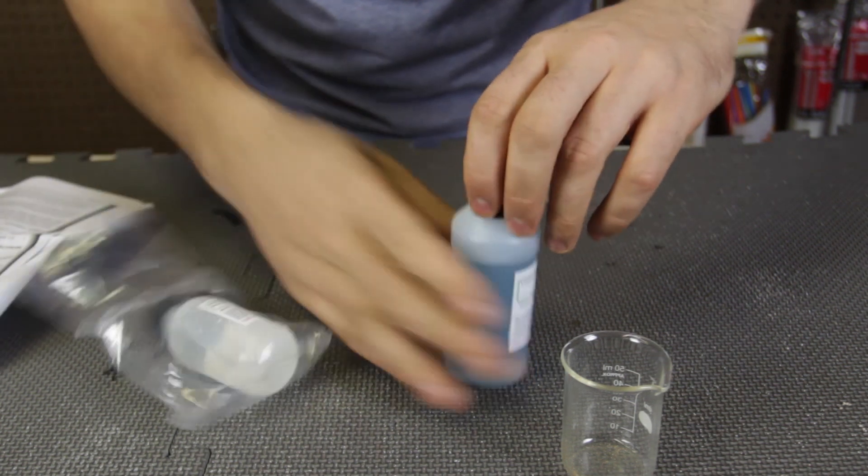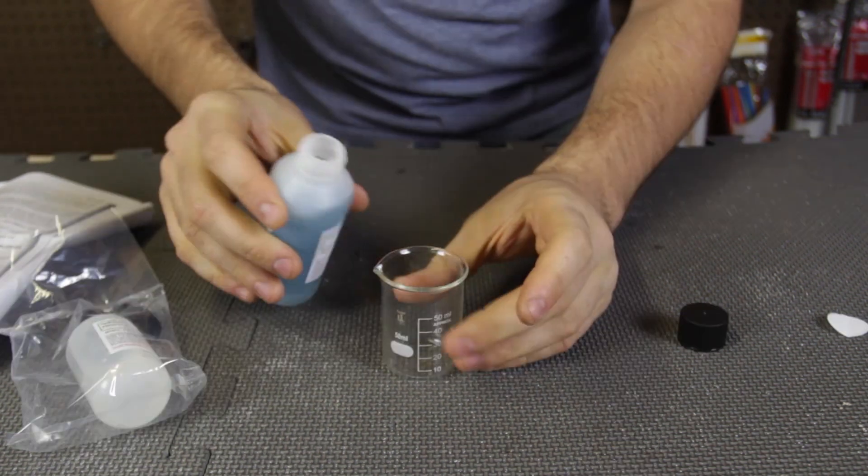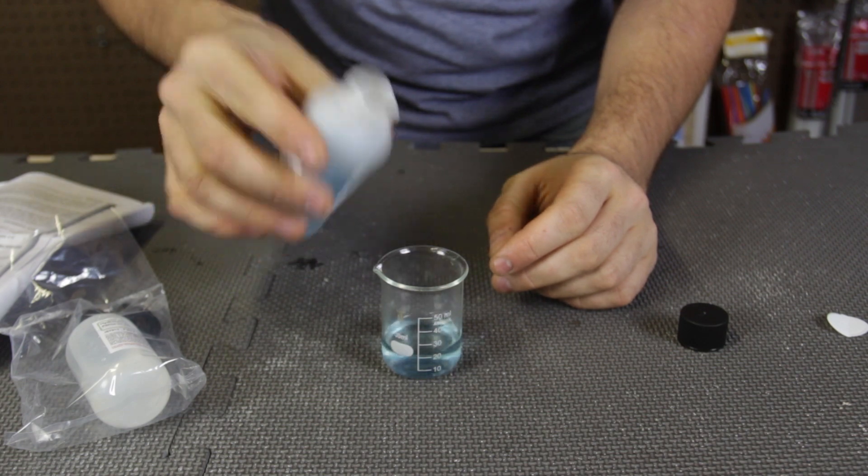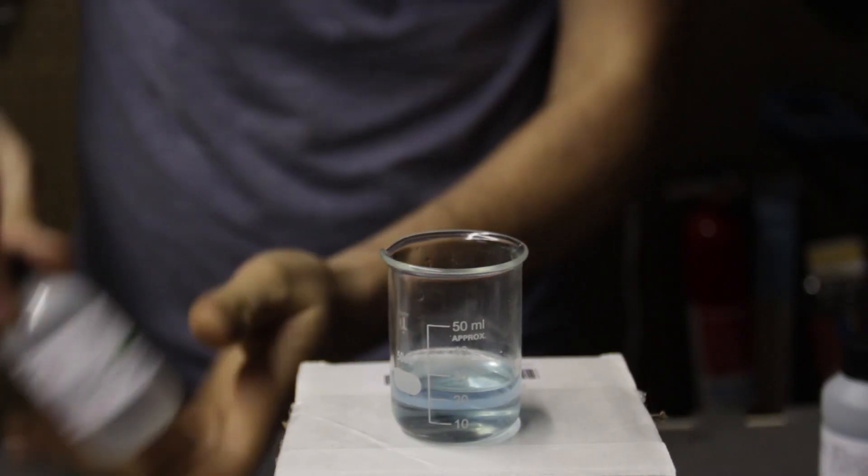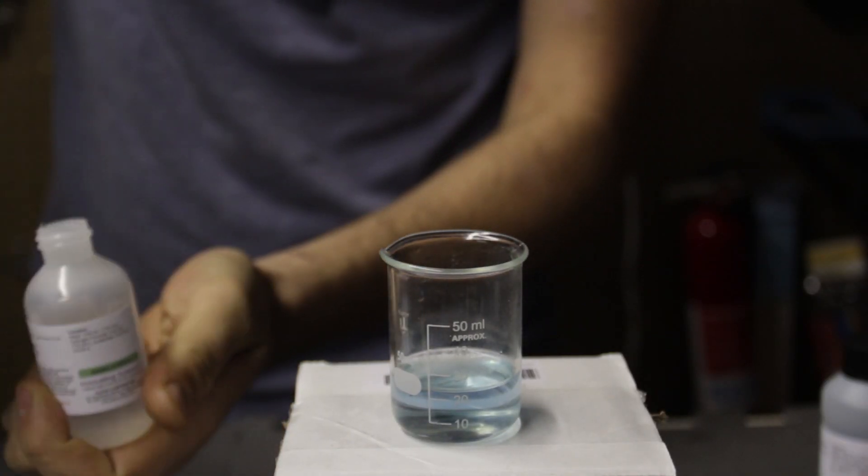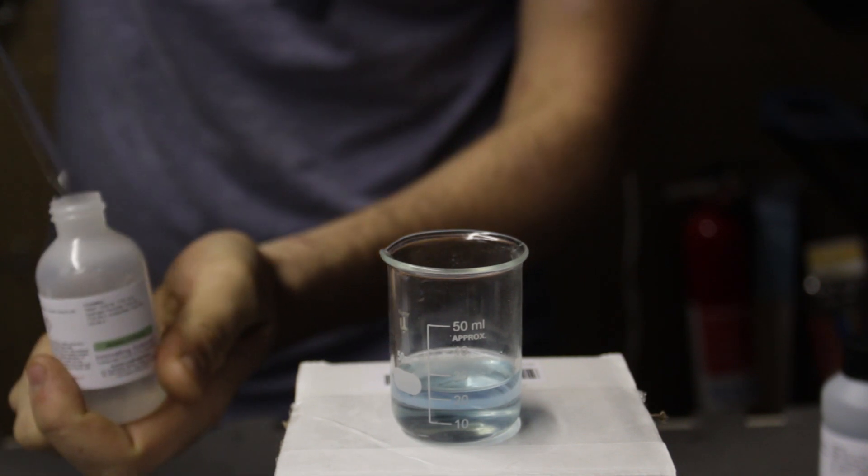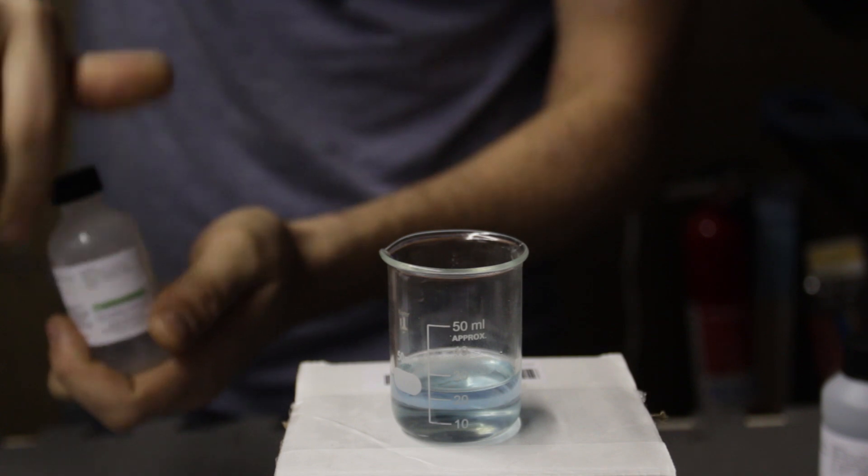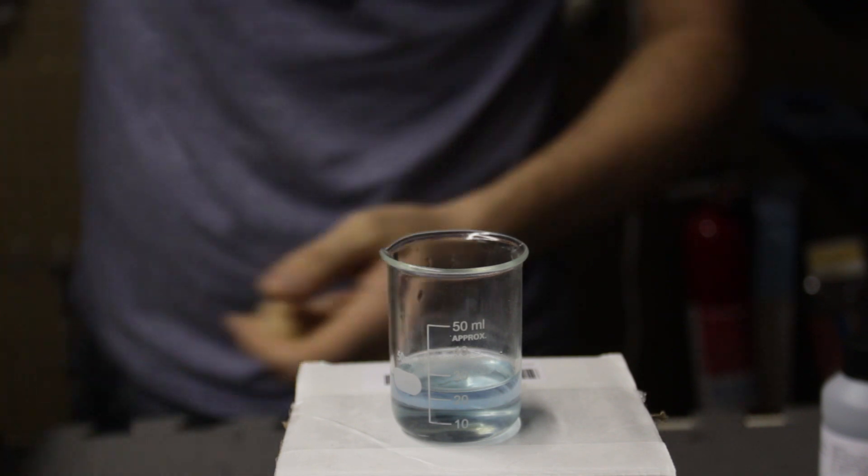So first of all I gotta put this luminol solution, about 20 milliliters in there. Boom, just like that. And then they say approximately 1 milliliter of hydrogen peroxide. Okay, now let's shut off the lights and drop a drop into it and see what happens.